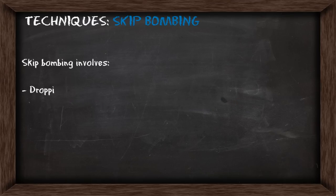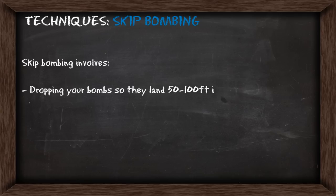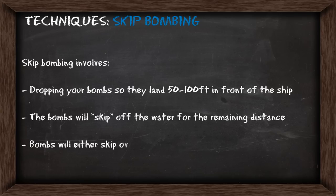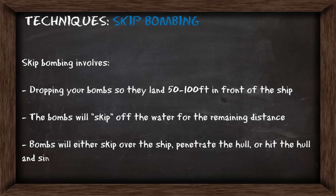Skip bombing involves dropping your bombs so they land 50 to 100 feet in front of the ship. The bombs will then skip off the water for the remaining distance, and will either skip over the ship, penetrate the hull, or hit the hull and sink before exploding.